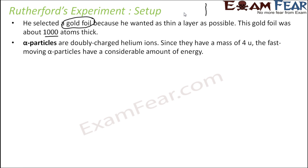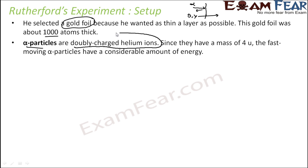Alpha particles were used in the experiment. Beta particles have higher penetrating power and gamma has very high penetrating power, so if you use those, they will all pass straight through the gold foil. Because alpha particles have lower penetrating power, some of them will bounce back. That's why Rutherford used doubly charged helium ions — alpha particles.